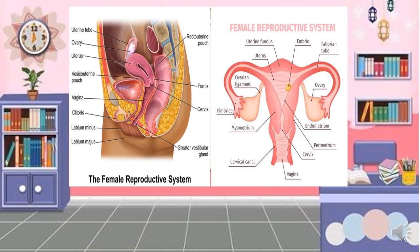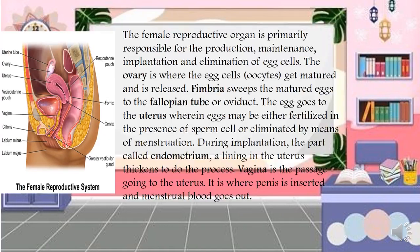Now let us move to the female reproductive system. The parts include the uterine fundus, uterus, ovarian ligament, fimbrae, myometrium, cervical canal, vagina, cervix, perimetrium, endometrium, ovary, fallopian tube, and the embryo. The female reproductive organ is primarily responsible for the production, maintenance, implantation, and elimination of egg cells.